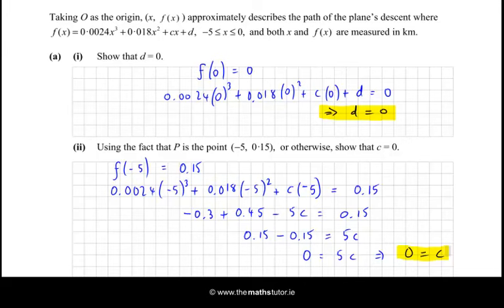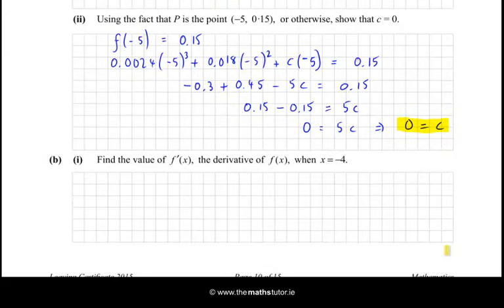So at this stage, we can write out the function without c or d. So f(x) is 0.0024x cubed plus 0.018x squared, and then the other two terms are 0. And now we can get f'(x), which is question b part 1. Find the value of f'(x), the derivative, when x equals -4. So let's find f'(x) first of all, and then sub it in.